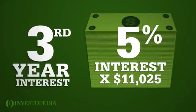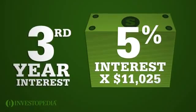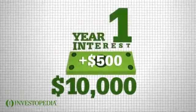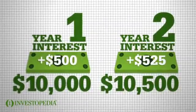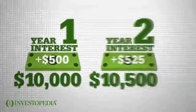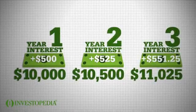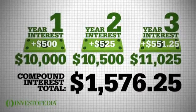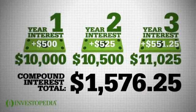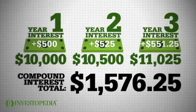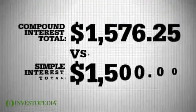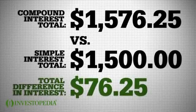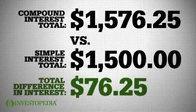In year 3, you earn 5% interest on $11,025 — $10,000 plus $500 (year 1 interest) plus $525 (year 2 interest) — for an interest payment of $551.25. In total, you earn $1,576.25 in interest over 3 years with compounding interest, versus $1,500 with simple interest, a difference of $76.25.